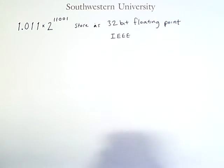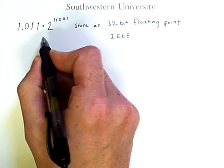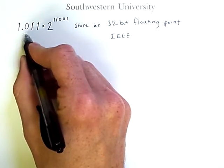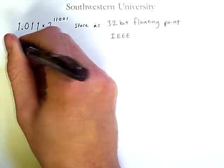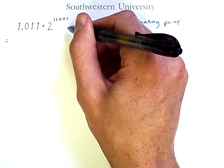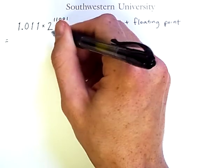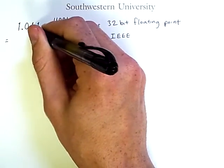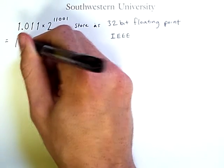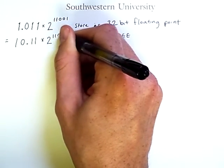The first thing to notice about this representation is that we can get the same value in many different ways by moving the binary point around. For example, if I subtract 1 from the exponent but want to keep the same number, it would be like I had already multiplied the value by 2. And multiplying by 2 shifts the point over, so this value is equal to 10.11 times 2 to the 11000.